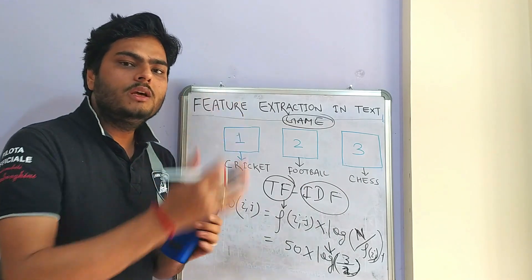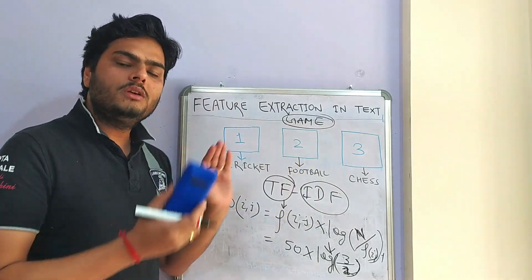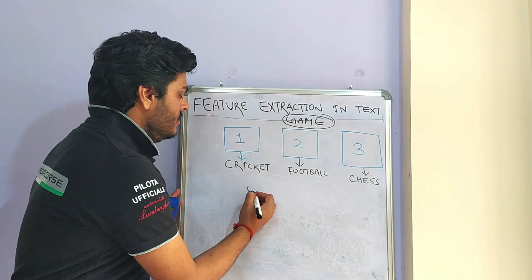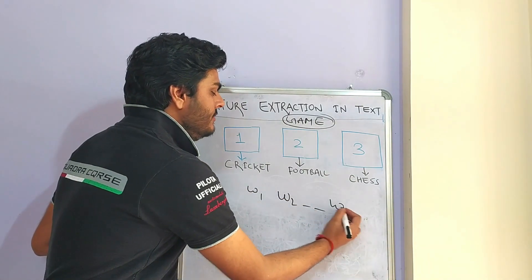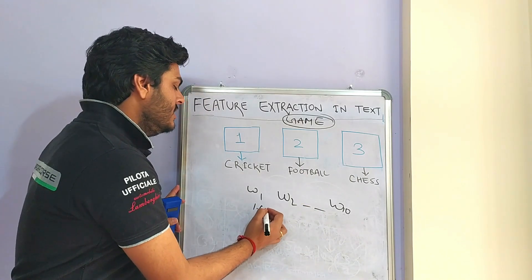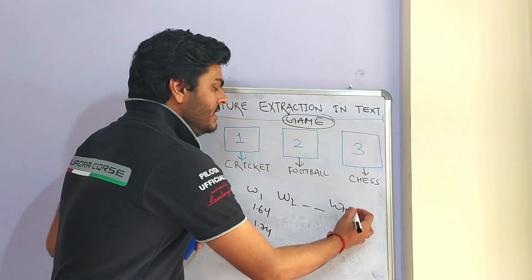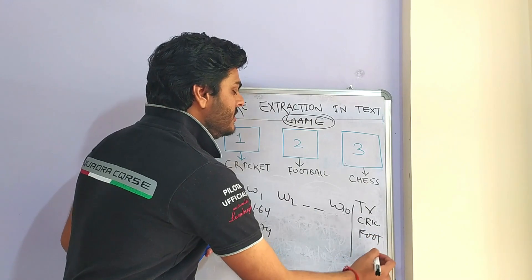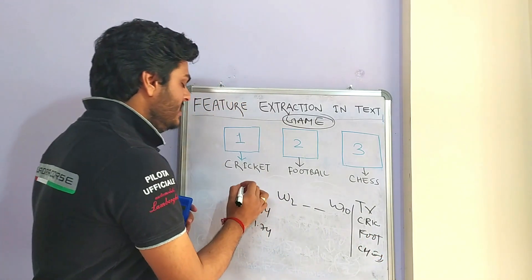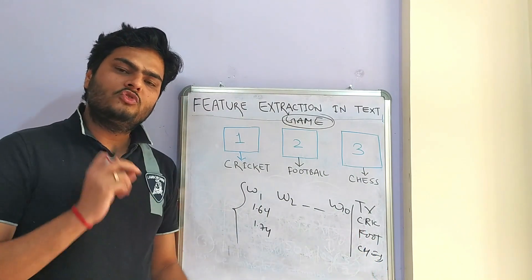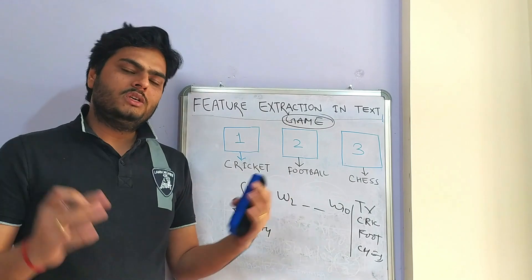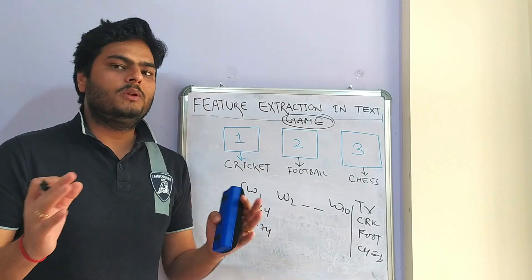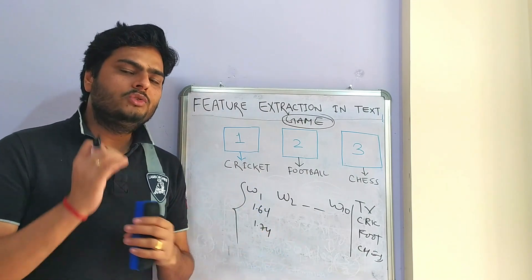The TF-IDF vector looks the same way as the word count vector: W1, W2 … W10, but now TF-IDF values appear — for example 1.64, 1.74 — along with a target variable: cricket, football, chess. Now you have the data and a target column. This is a plain supervised machine learning problem — take any classifier such as logistic regression or random forest, and you can very easily fit this data into the algorithm and solve the problem of feature extraction in machine learning using text data.